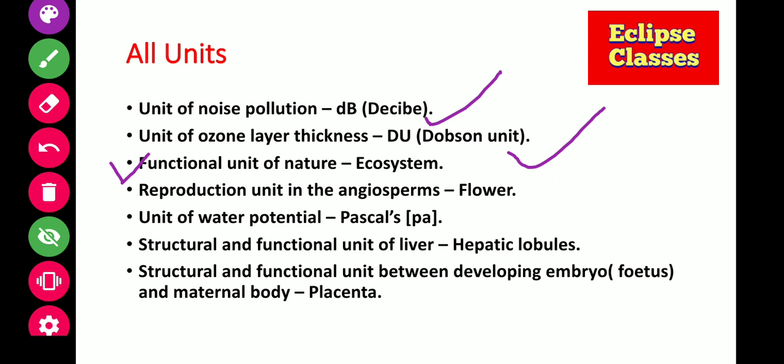Reproduction unit in the angiosperm — Flower. Unit of water potential is Pascals. Structural and functional unit of liver is hepatic lobules. और liver क्या है? Largest gland भी है.